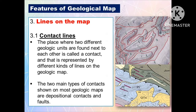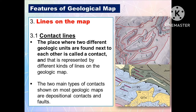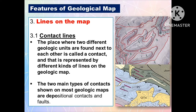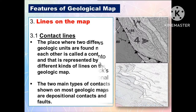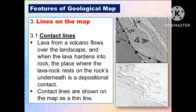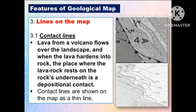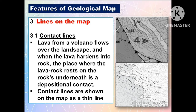Another feature of geological maps is the lines on the map. The first type is the contact lines. The place where two different geologic units are found next to each other is called a contact, and that is represented by different kinds of lines on the geologic map. The two main types of contact shown on most geologic maps are depositional contacts and faults. When lava from a volcano flows over the landscape and hardens into rock, the place where the lava rock rests on the rocks underneath is a depositional contact. Contact lines are shown on the map as a thin line.